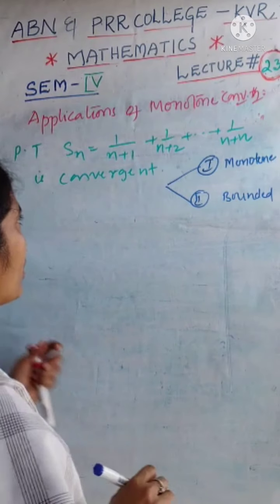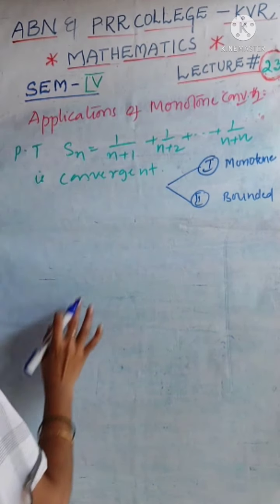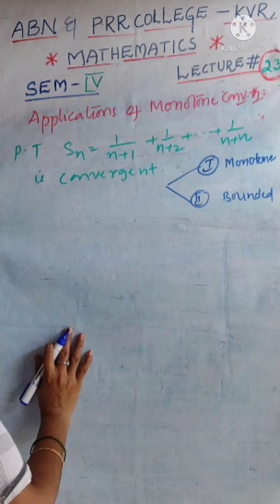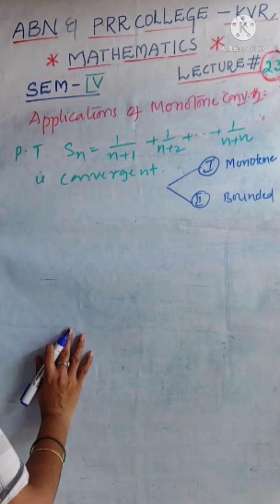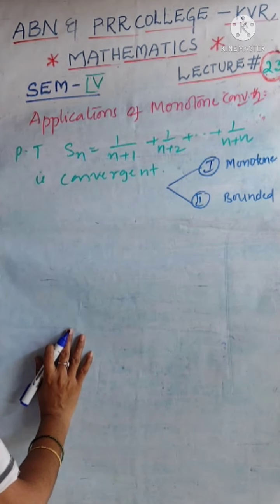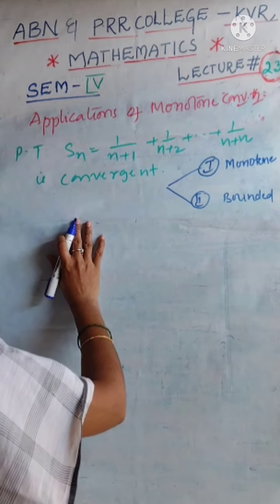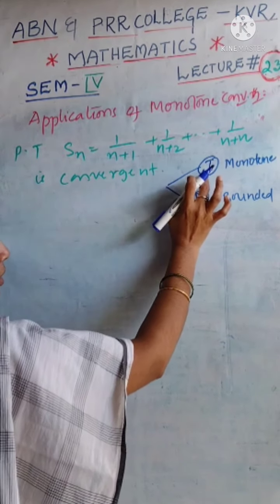Coming to the second application, we want to prove that the sequence given by 1 by n plus 1 plus 1 by n plus 2 plus and so on, 1 by n plus n, is convergent. To prove this condition, we want to take two cases.